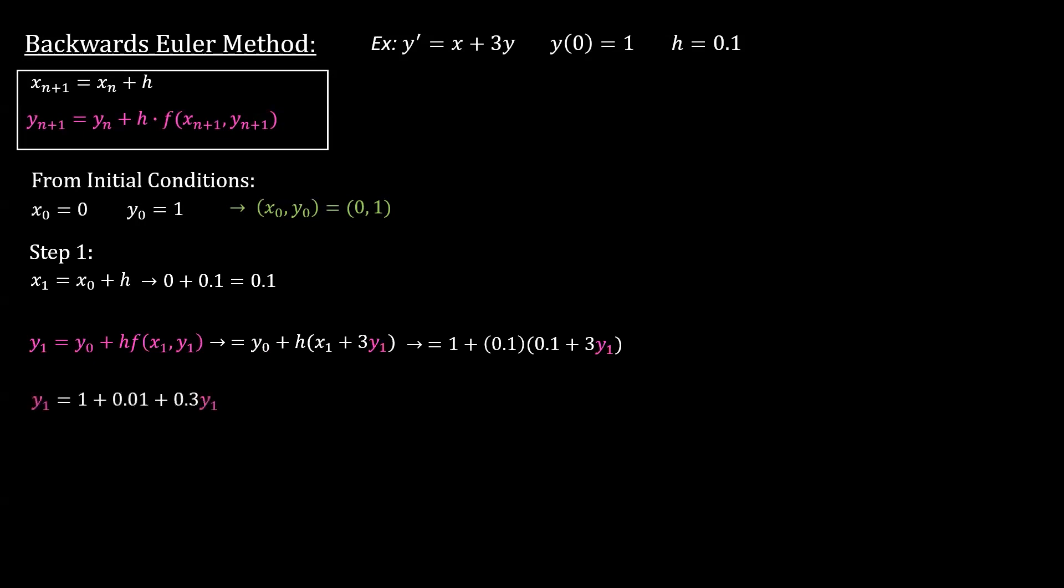Plugging it in we get y1 equals 1 plus 0.1 times (0.1 plus 3y1). Let's distribute that 0.1, the step size, and we're going to end up with y1 equals 1 plus 0.01 plus 0.3y1. Once again we have y1 on both sides and we're going to solve for y1. This is the only method where we are actually doing algebra to solve for our variable.